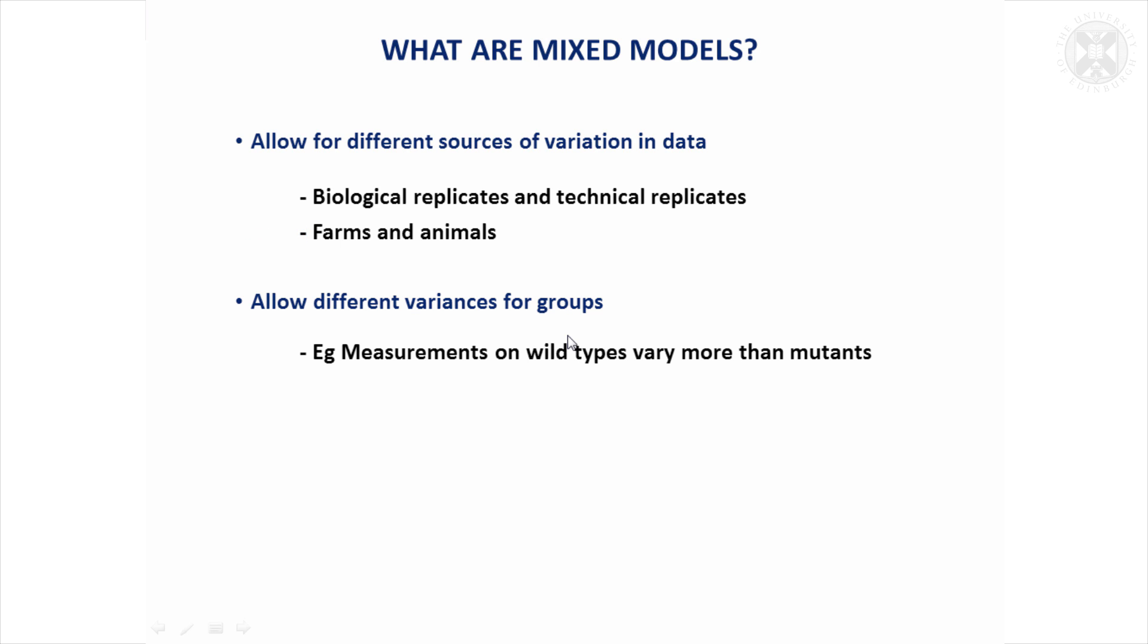Another thing it's very straightforward to do, you can to a certain extent with ordinary testing, but it's very easy to allow different groups to have different amounts of variability. So for example, if you were comparing two groups of mice, wild types and mutants, you could allow them to have different amounts of variability and quite often that happens in practice.